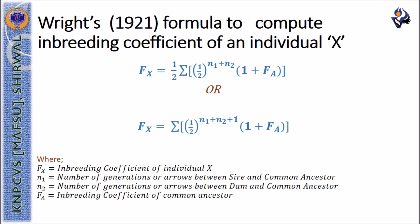This is the formula proposed by Wright to calculate the inbreeding coefficient of an individual X: Fx equals the summation of (1/2) raised to n1 plus n2 plus 1, multiplied by 1 plus FA. Here, Fx denotes the inbreeding coefficient of individual X, n1 and n2 are the number of generations to the common ancestor through the sire and dam respectively, and FA is the inbreeding coefficient of the common ancestor.